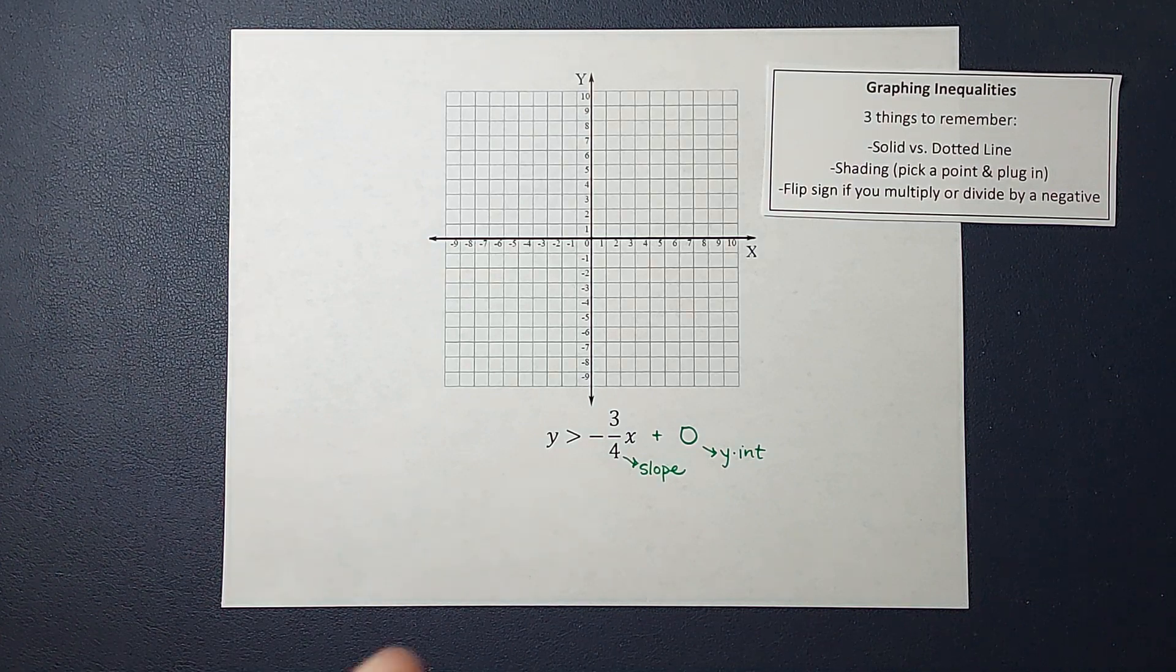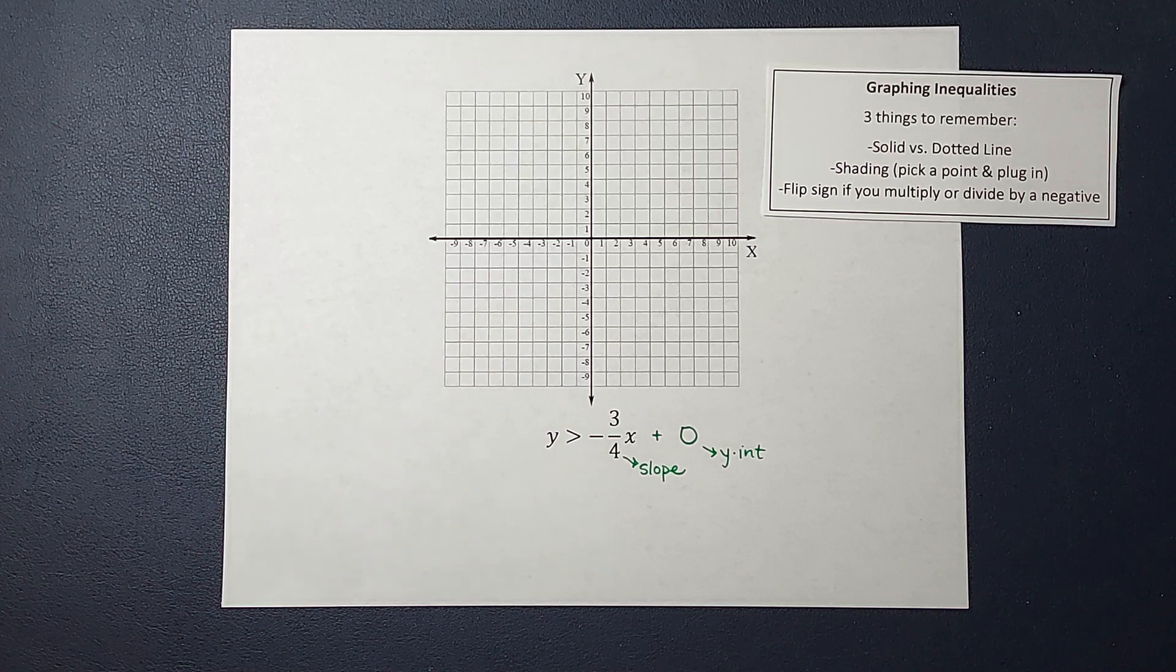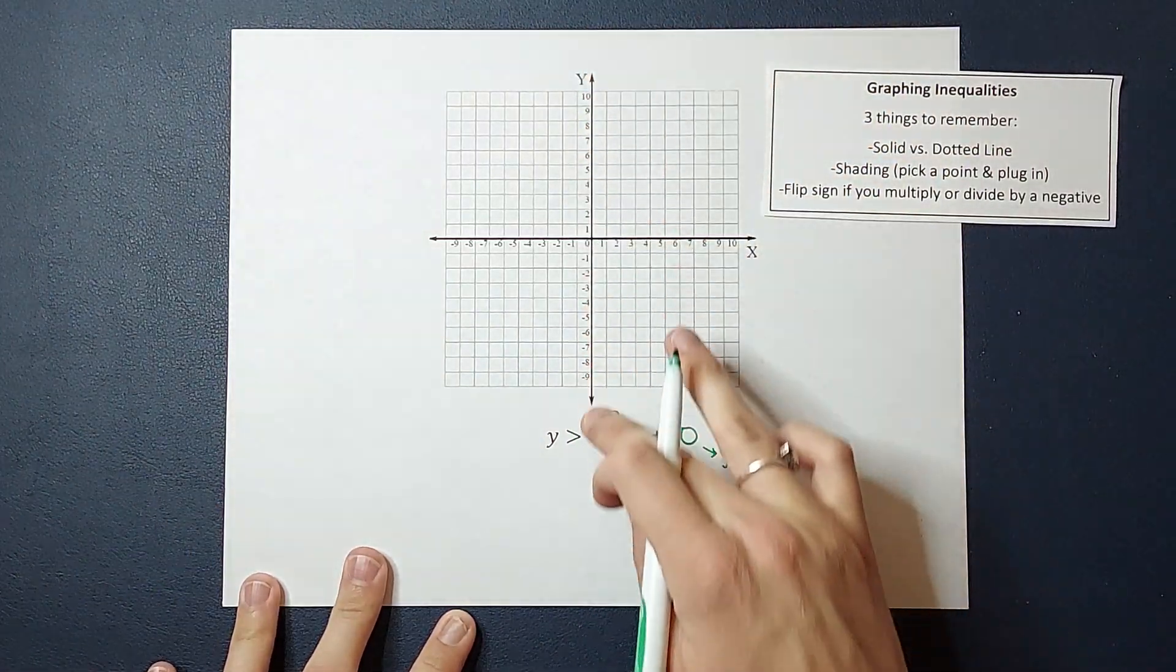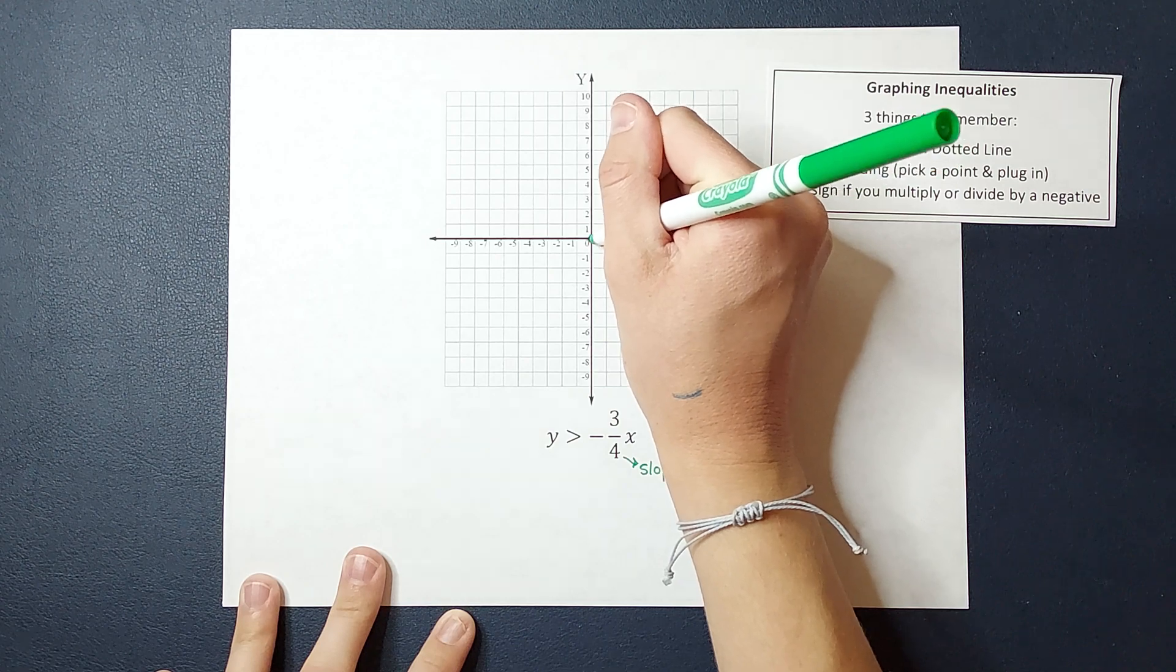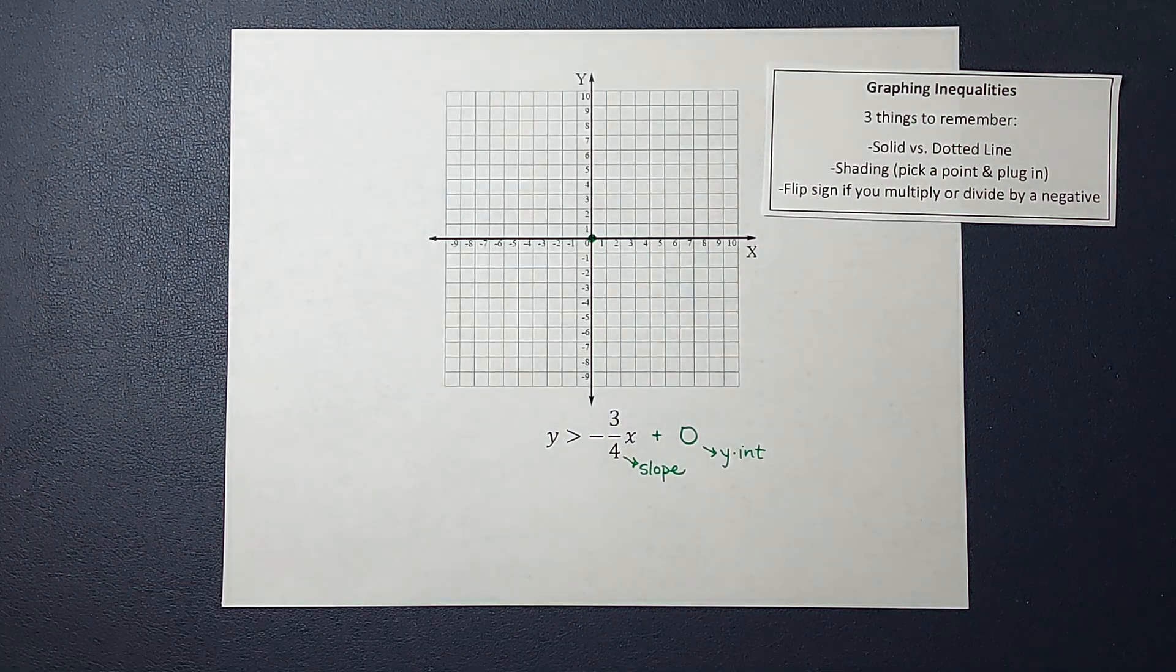If you need a review on graphing lines, I'll link one for you in the corner. But my Y intercept is at zero, which means here's my Y axis. My line crosses at zero.